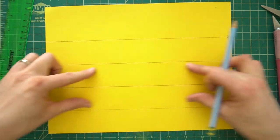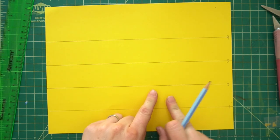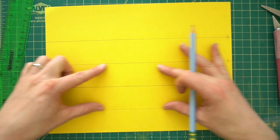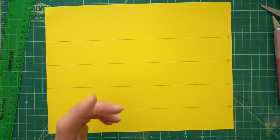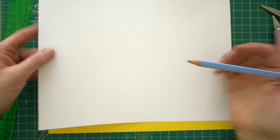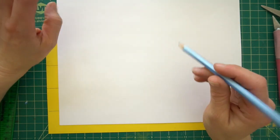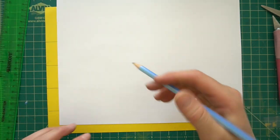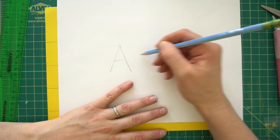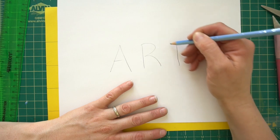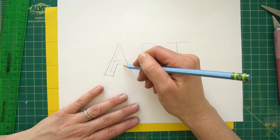You're going to draw your word, your letters for your word in between spaces one and two and two and three. So right in here. And you can write whatever you want. Some of you, actually most of you probably have way better handwriting than me and a way cooler style. So I'm just going to show you a really simple way to make a block letter.